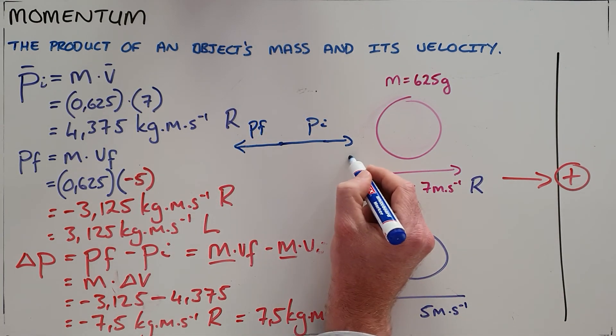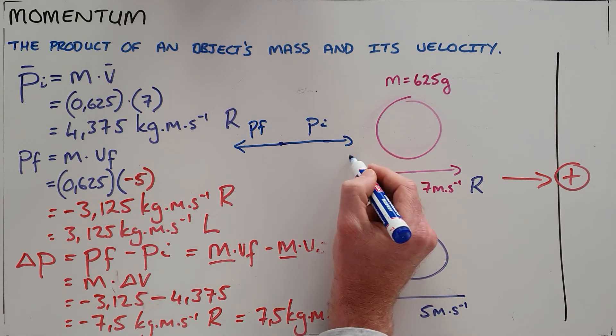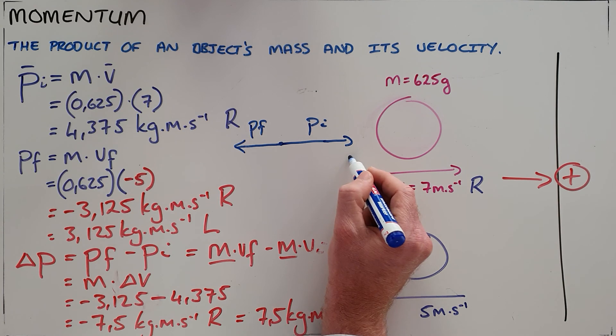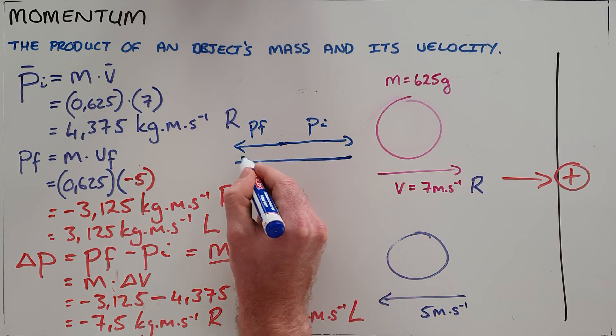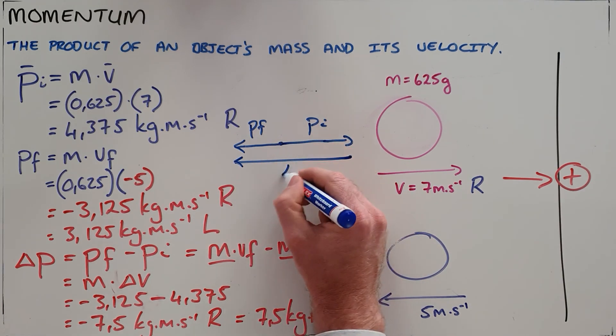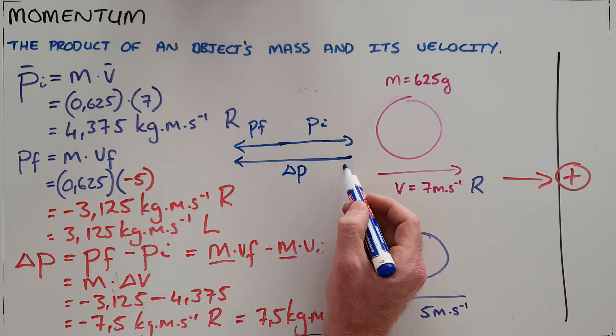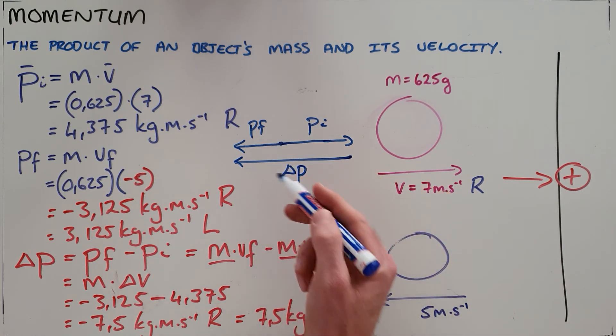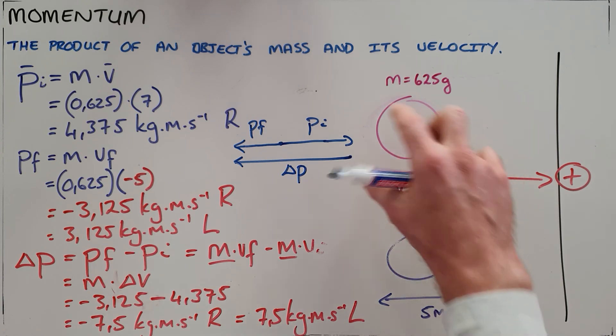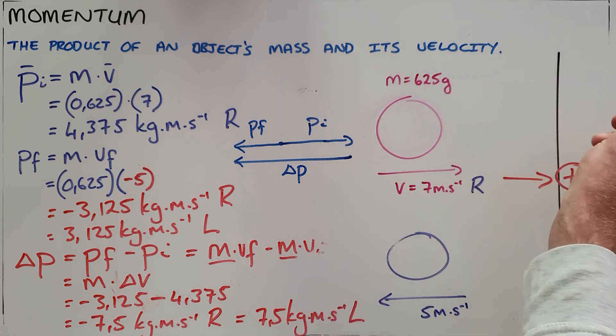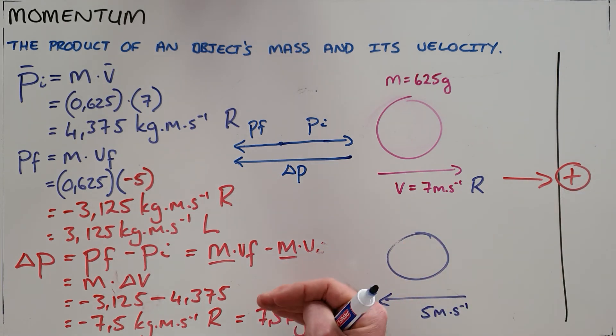And then we can show that the change in momentum is the difference between the head of the initial momentum and the head of the final momentum. So here we can clearly see that our change in momentum is to the left, because the ball has had to stop or slow down going in the right direction, and then speed up or start to move in the negative direction to the left, which shows that our change in momentum is then to the left.